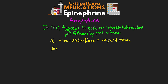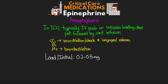The beta-2 activation also aids in bronchodilation, as well as the potential benefits with our beta-1 activation. The loading dose you're going to be giving is usually 0.2 to 0.5 milligrams — think 2 to 5 mLs of a 0.1 mg per mL concentration. Then our infusion dose for this is probably going to be 8 micrograms per minute.